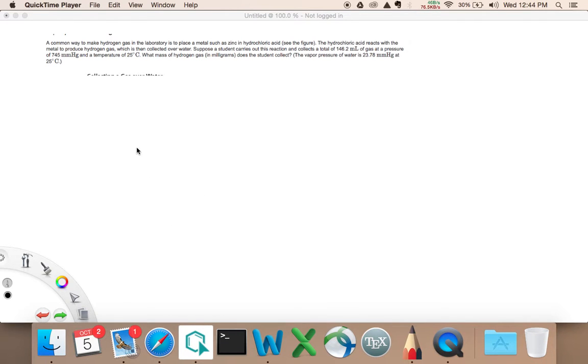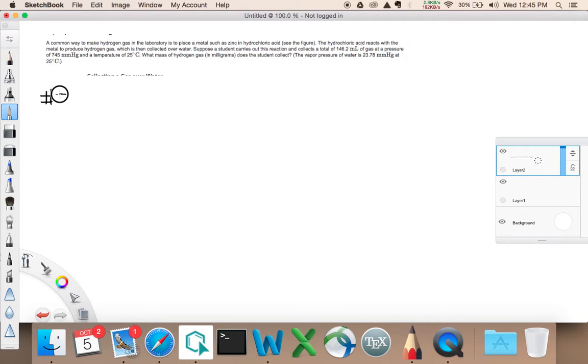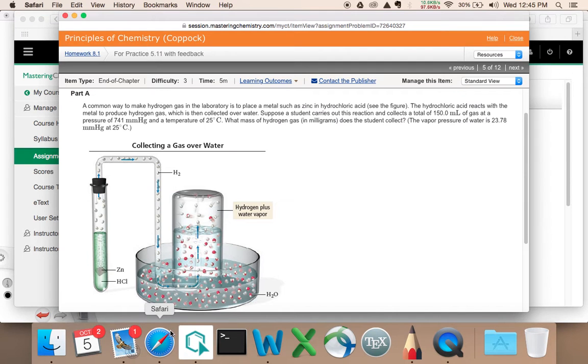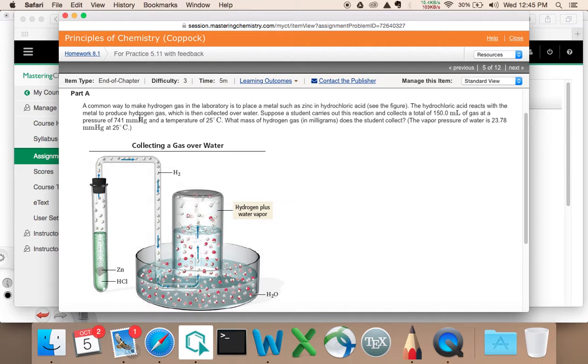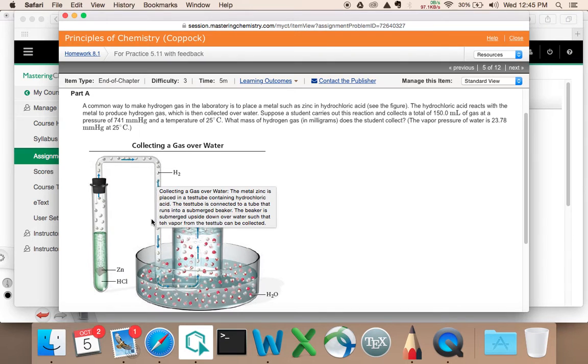Okay, so I've got a question that we started to deal with in class today and never got to it completely, and we call it at the time problem number five. So the question says it's a common way to make hydrogen gas in the laboratory is to place a metal, such as zinc, in hydrochloric acid. See the figure? The figure's right here. Zinc and hydrochloric acid. The HCl reacts with the metal to produce hydrogen gas, which is then collected over water. So the gas is here, hydrogen gas, and it's going in here, and it's being collected over water.